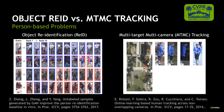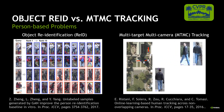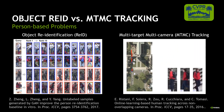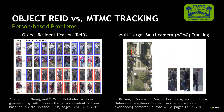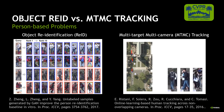On the other hand, multi-target and multi-camera tracking, or MTMC tracking, is a different task. The original videos and camera topology are provided so that spatial-temporal information can be leveraged for identity association.